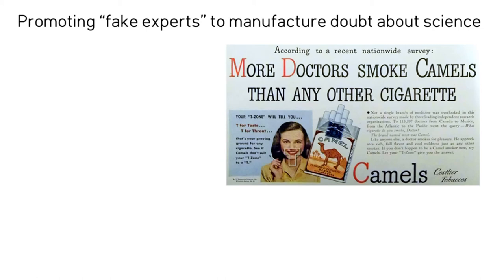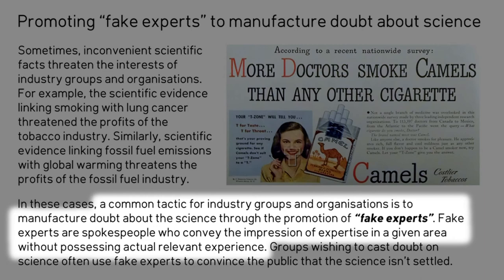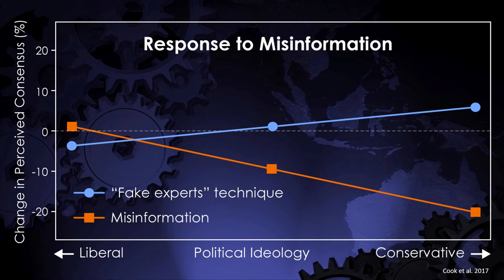John also had an intervention in his study, in which he explained the concept of fake experts used to manufacture doubt about the science. He used an example from the tobacco industry, where ads claimed things like "more doctors smoke Camels than any other cigarette." A common tactic for industry groups is to manufacture doubt about the science through the promotion of fake experts — spokespeople who convey the impression of expertise in a given area without possessing actual relevant experience. When people, armed with this inoculation about fake experts, received the information about the Petition Project, the misinformation was essentially neutralized so that it no longer negatively affected the perceived consensus. It seems people just don't like to be misled, regardless of where they fall on the political spectrum.